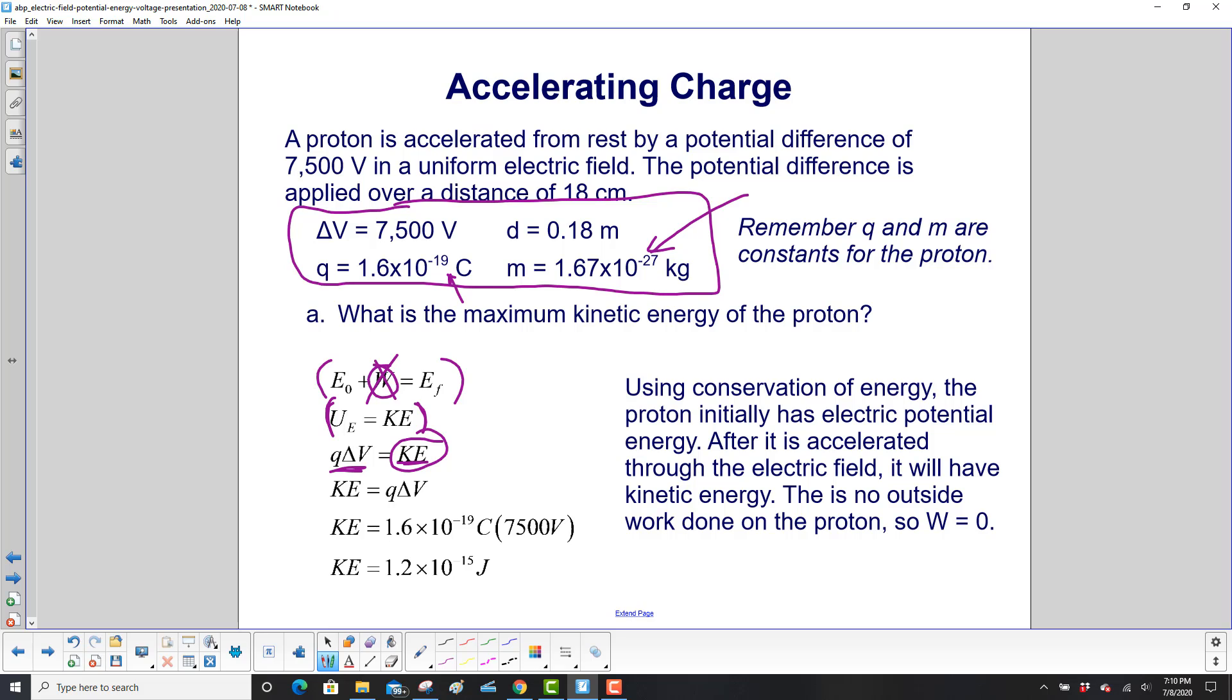So kinetic energy is Q delta V. Here's our Q. Here's our delta V. And the kinetic energy is 1.2 times 10 to the minus 15th joules.